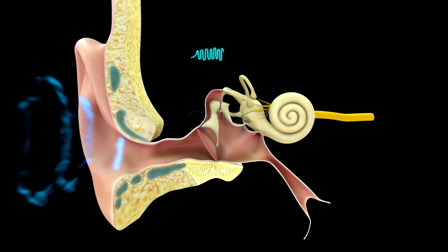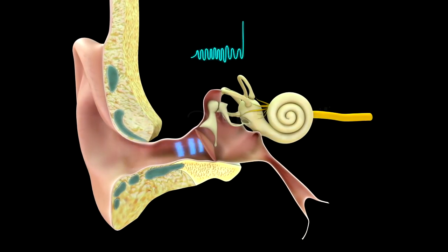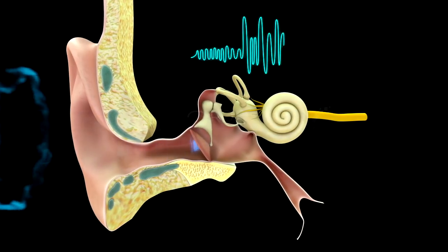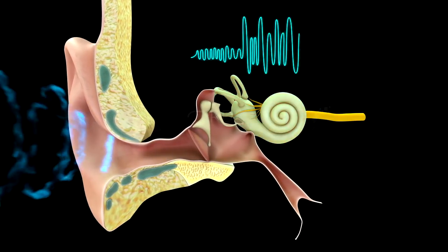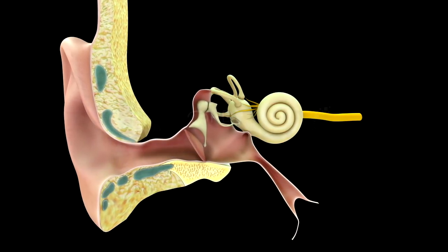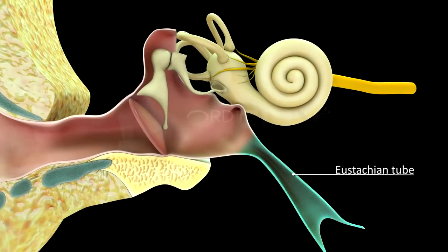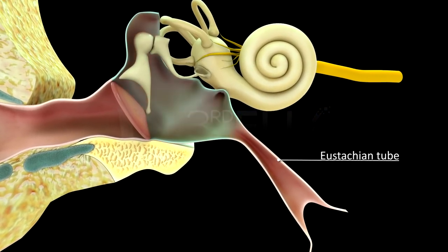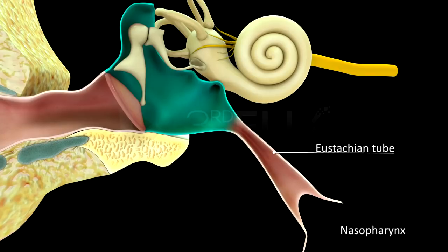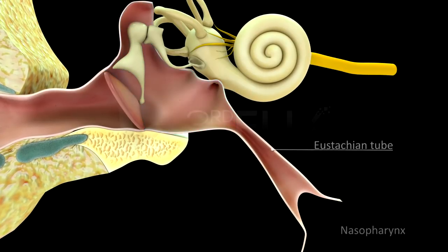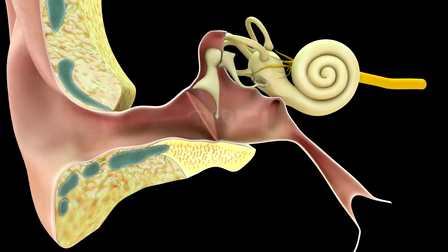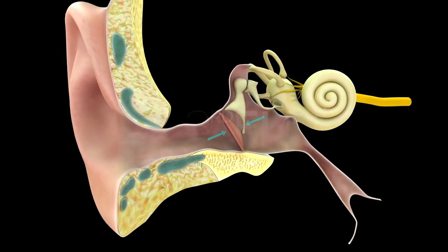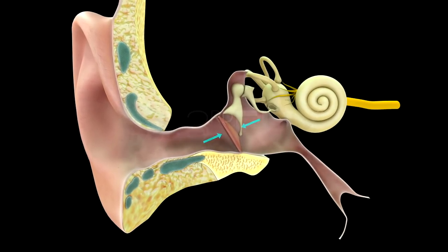The ear ossicles help in the amplification of sound waves and transmit them to the internal ear. The Eustachian tube is an elastic tube that connects the middle ear cavity with the nasopharynx. It helps in equalising air pressure on either side of the tympanum.